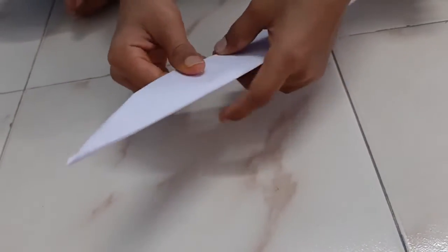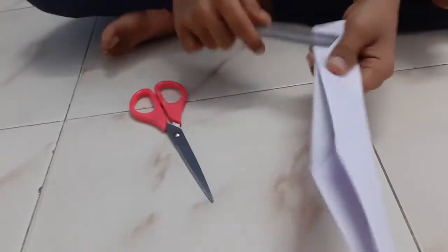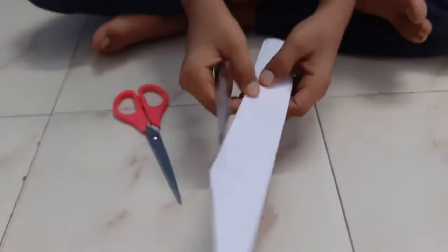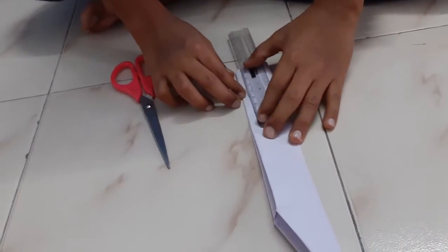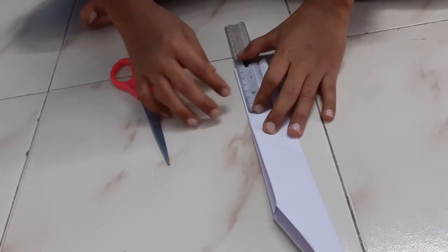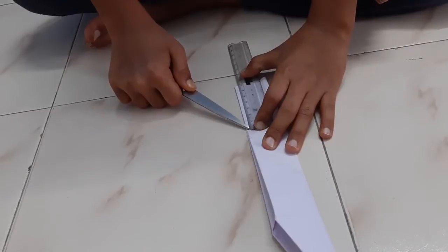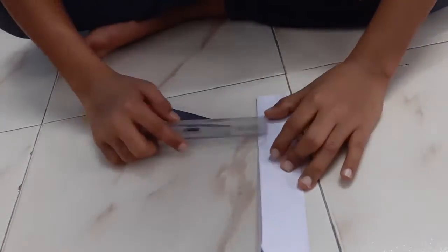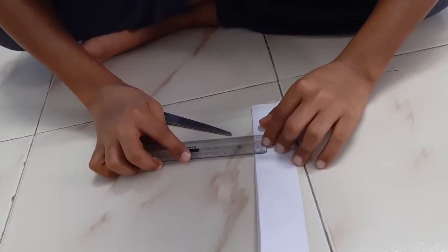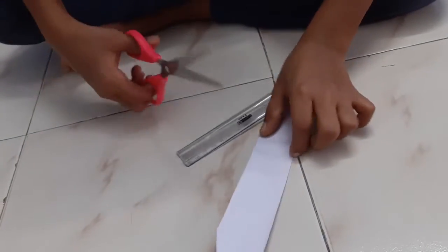Now we need to take the scissors and the scale. From this part where this thing is we have to measure 7 or 8 cm. I am taking 7 cm. And I will keep the scissors there or I am marking with it. It should be near to 1 cm like this. And we have to cut that much.